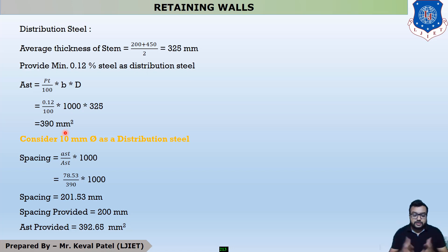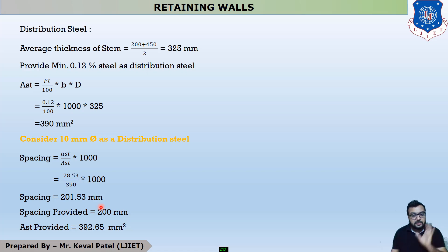For distribution steel, we provide 10 mm diameter bars. The spacing = (ast ÷ Ast) × 1000, where ast = π/4 × 10² and Ast = 390 mm², giving spacing required = 201.53 mm. We provide spacing at the closer side, so spacing provided = 200 mm, and Ast provided = 392.65 mm².